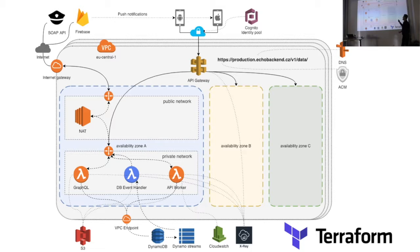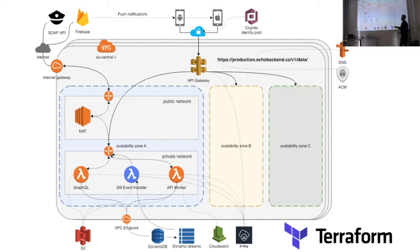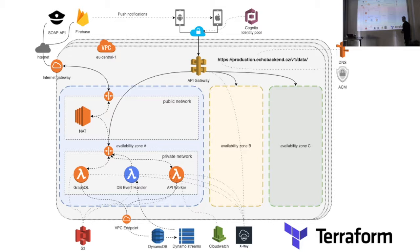The second lane is how we actually seed the database — how we connect to the API that police provides and download the data to seed the database. The third lane is how we notify the user of the application that some data changed. For example, if a new kid goes missing, we need to notify the user. This third lane is about how we react to database record changes.